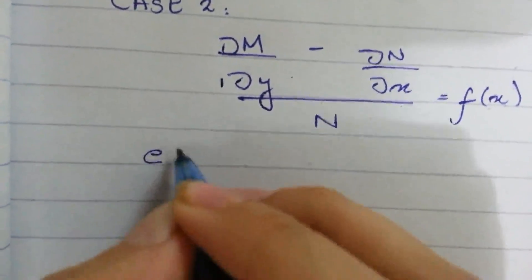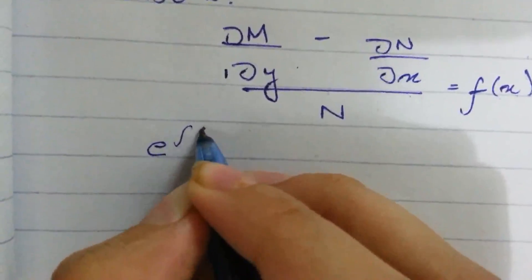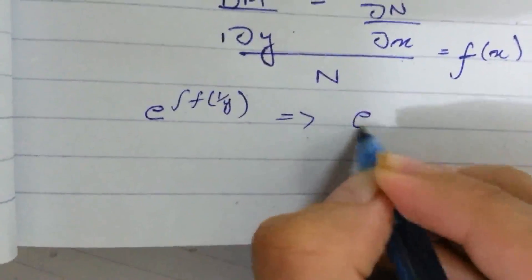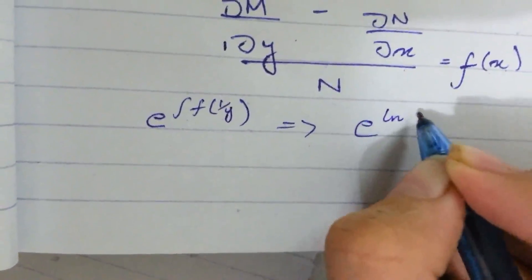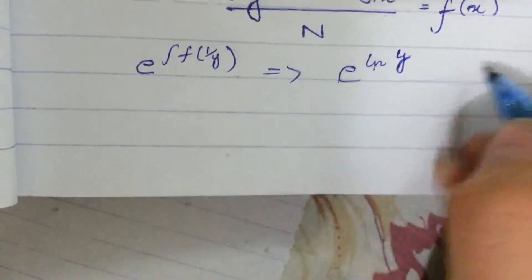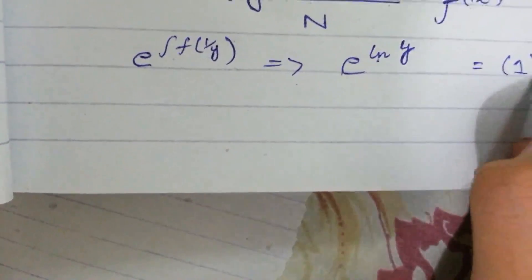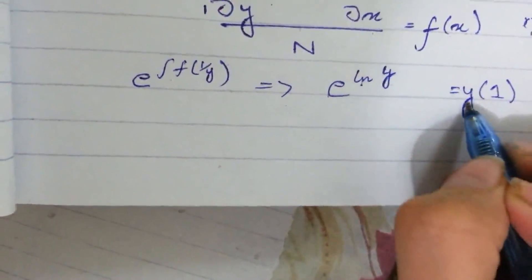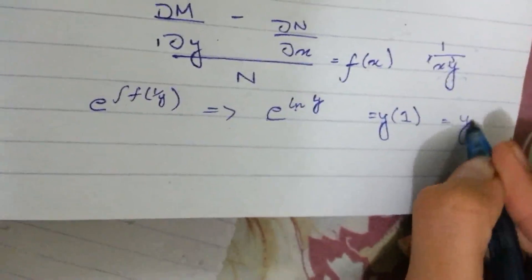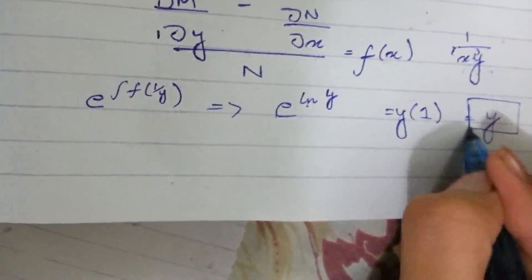The integrating factor is e^∫(1/y)dy = e^(ln y) = y. As we know, e and ln cancel, and the power comes down as the base, so this whole is y. This is the integrating factor.